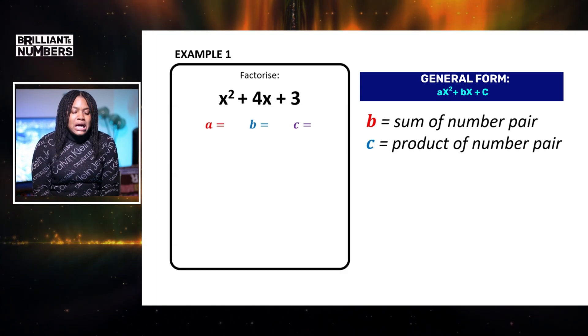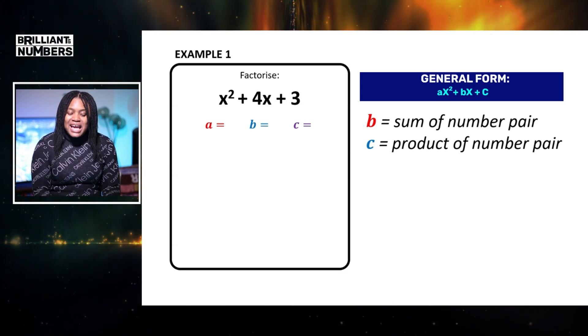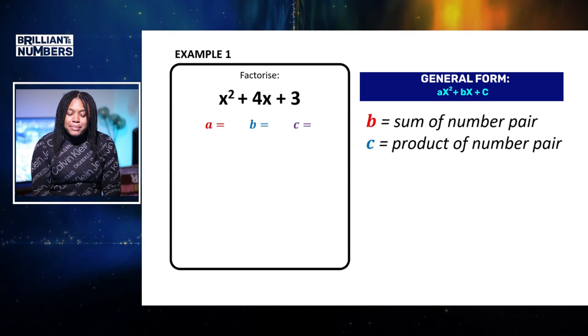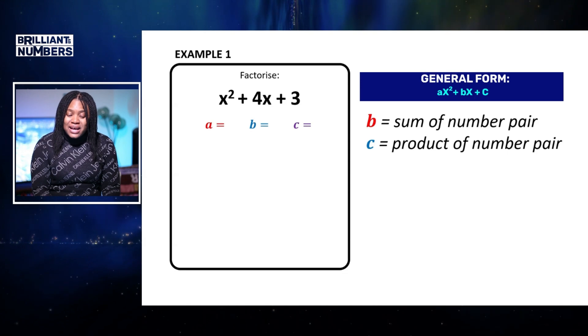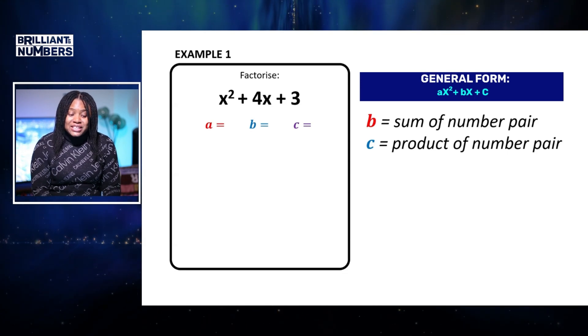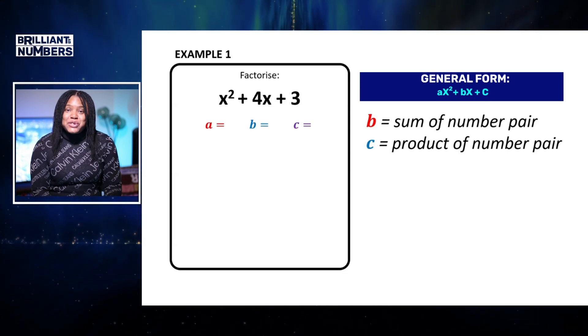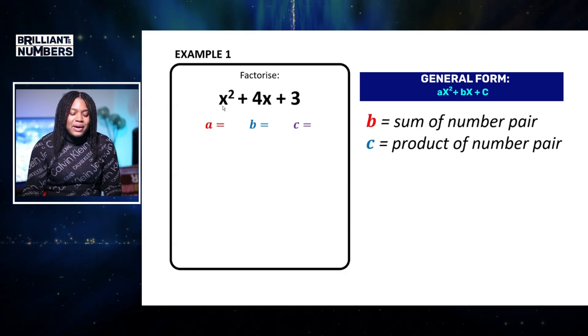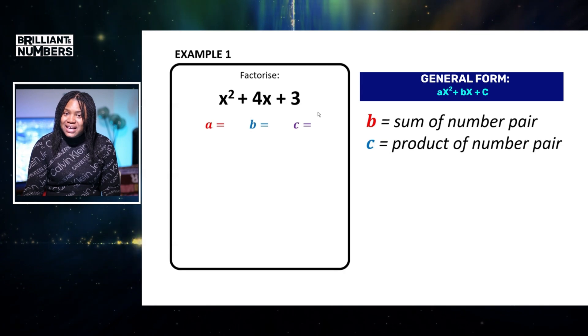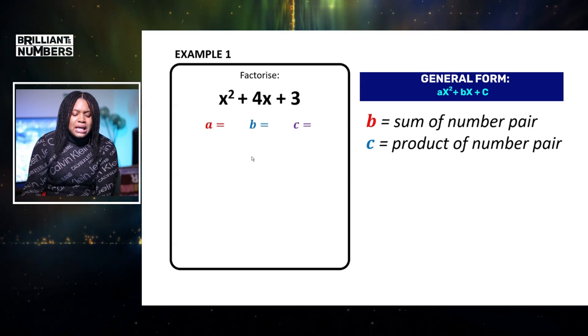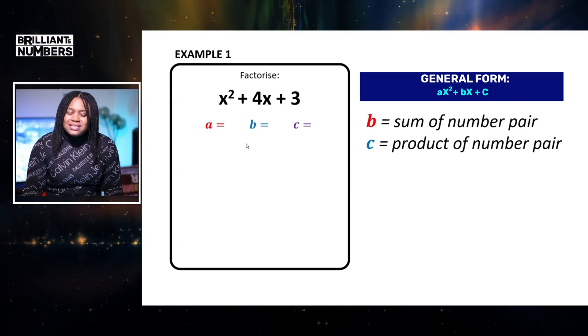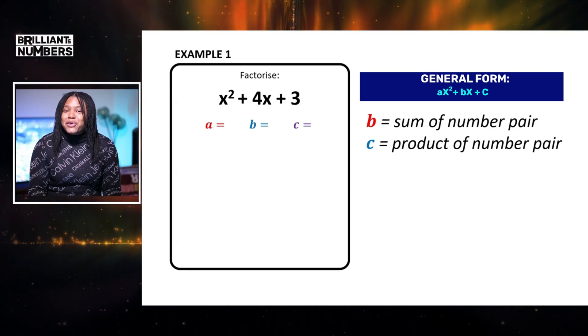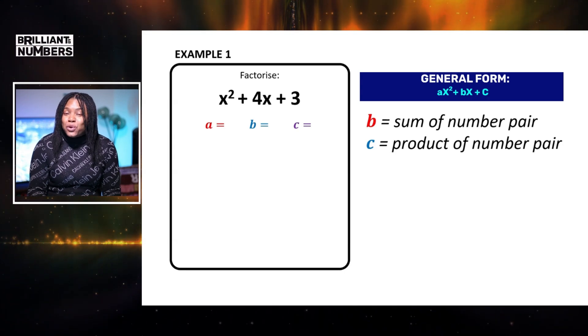So here we're asked to factorize the quadratic x squared plus 4x plus 3. Remember, a is the coefficient of x squared, b is the coefficient of x and c is our constant term. So we're going to identify what is a, what is b and what's c from this quadratic. Now, you may notice that there's no number before x squared.